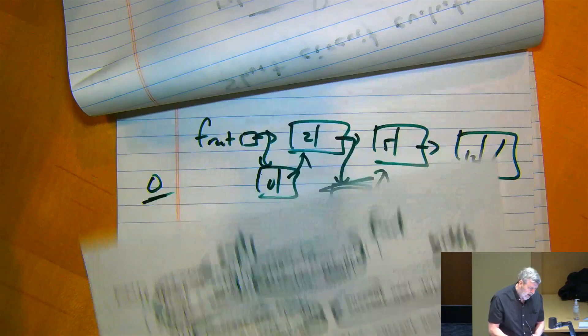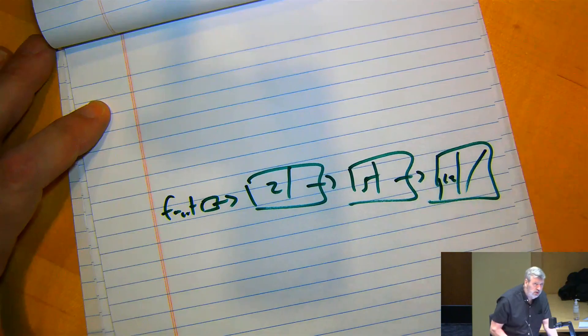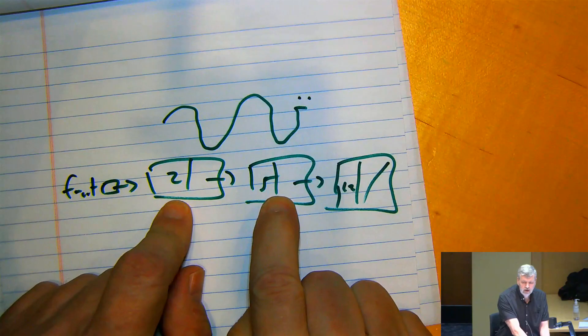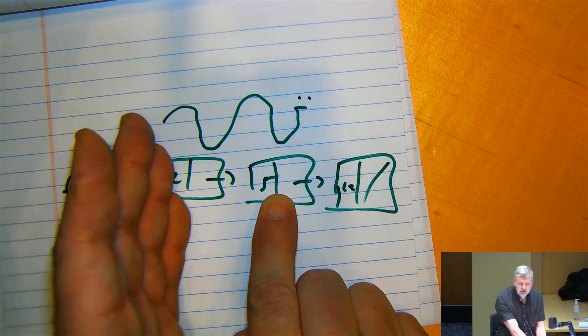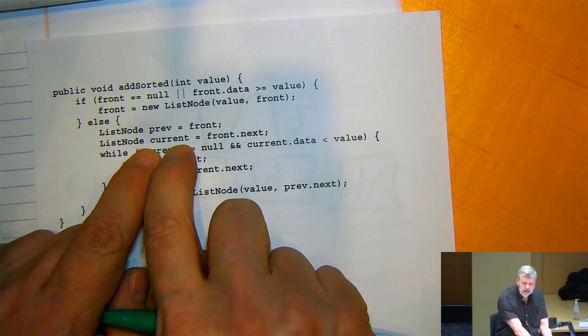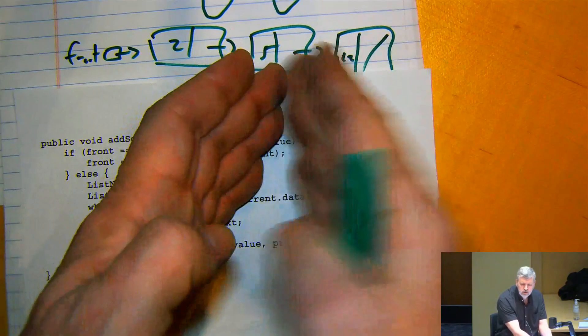One last idea: the inchworm approach. Imagine an inchworm two nodes long, sitting on two nodes at a time — keeping track of a prev and a current. To move forward: set prev = current, then current = current.next. This two-pointer style is a different approach to linked-list programming where you always have access to the node before your current position.